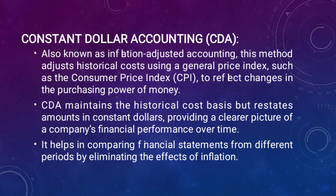The third method is constant dollar accounting, also known as inflation-adjusted accounting. This method adjusts historical costs using a general price index, such as the Consumer Price Index, to reflect changes in the purchasing power of money. Constant dollar accounting maintains the historical cost basis but restates amounts in constant dollars, providing a clear picture of a company's financial performance over time. It helps in comparing financial statements from different periods by eliminating the effect of inflation.